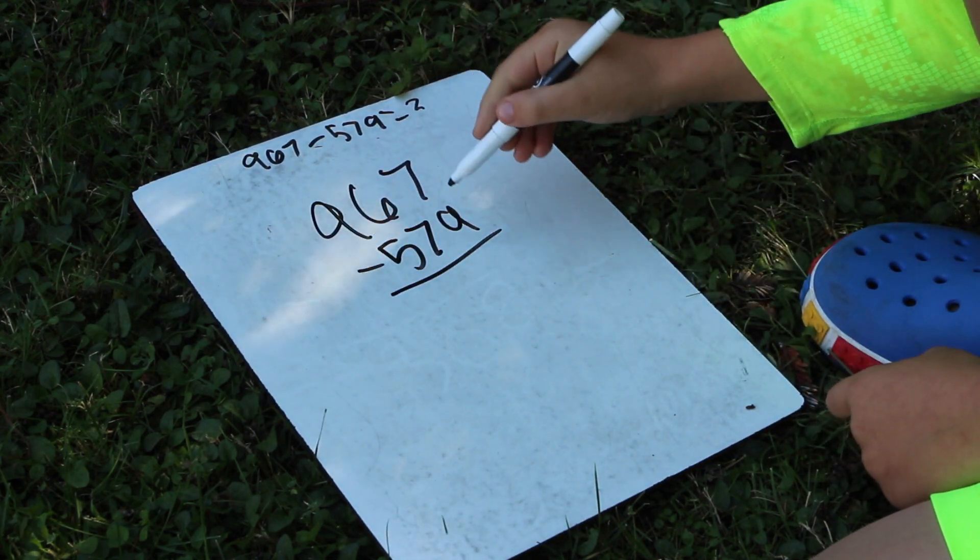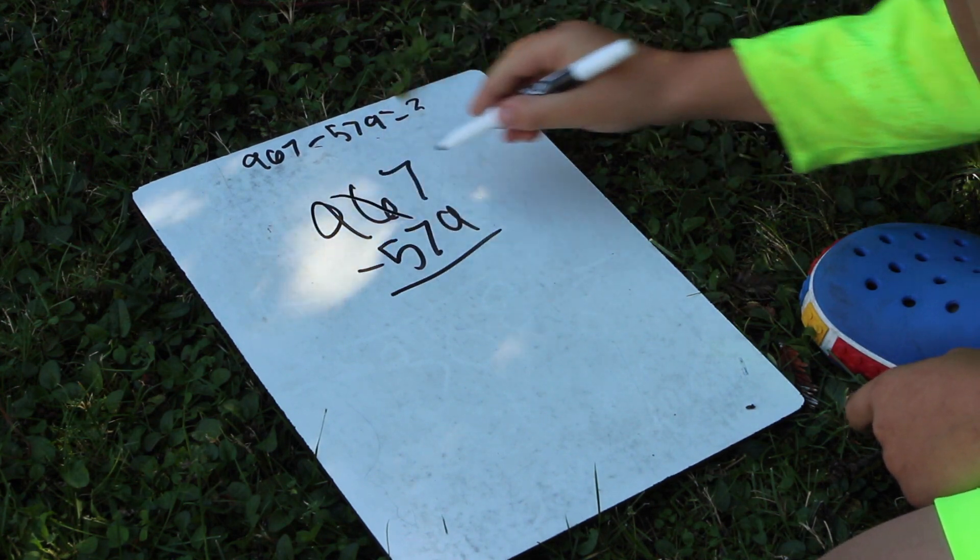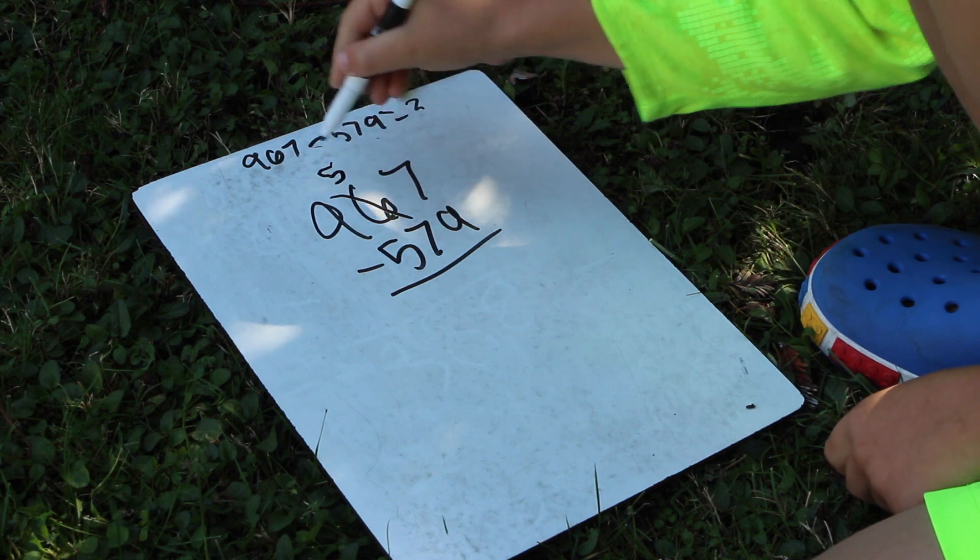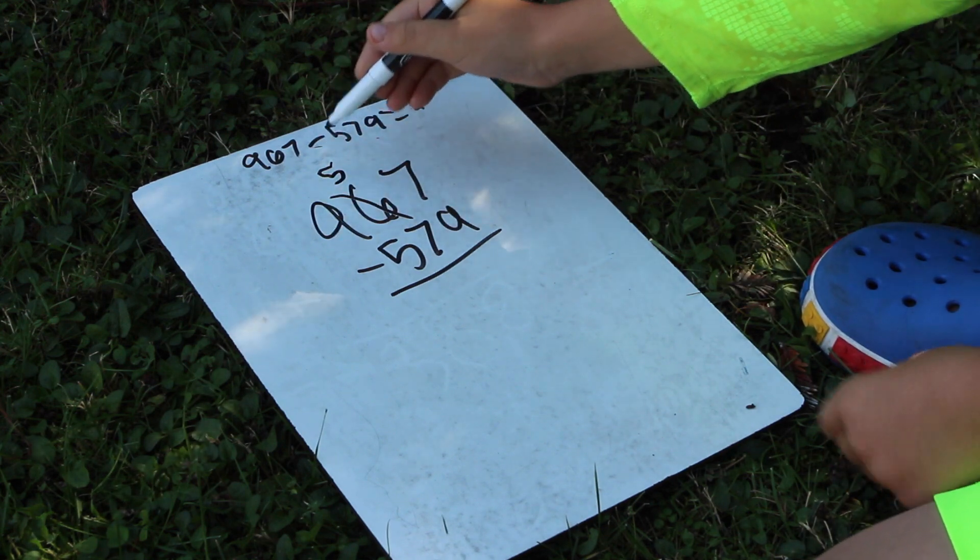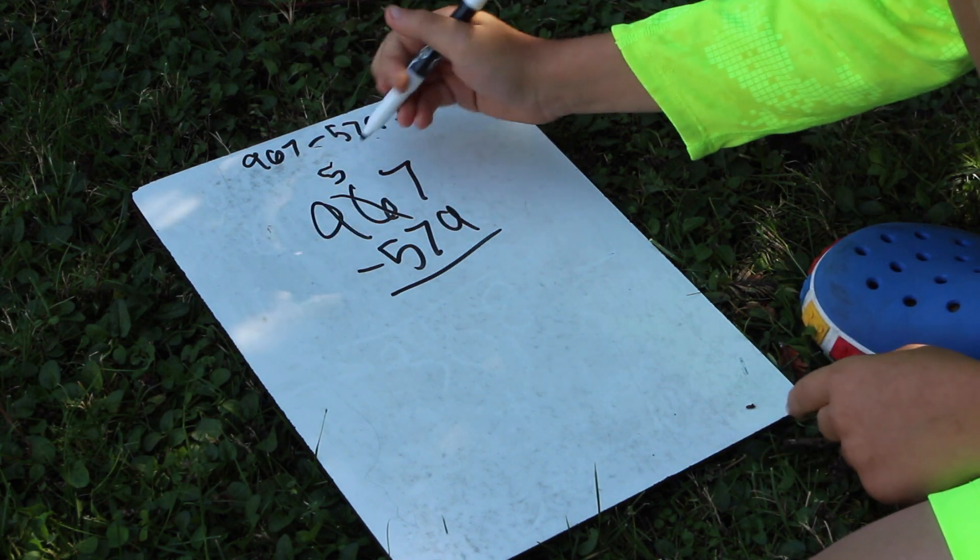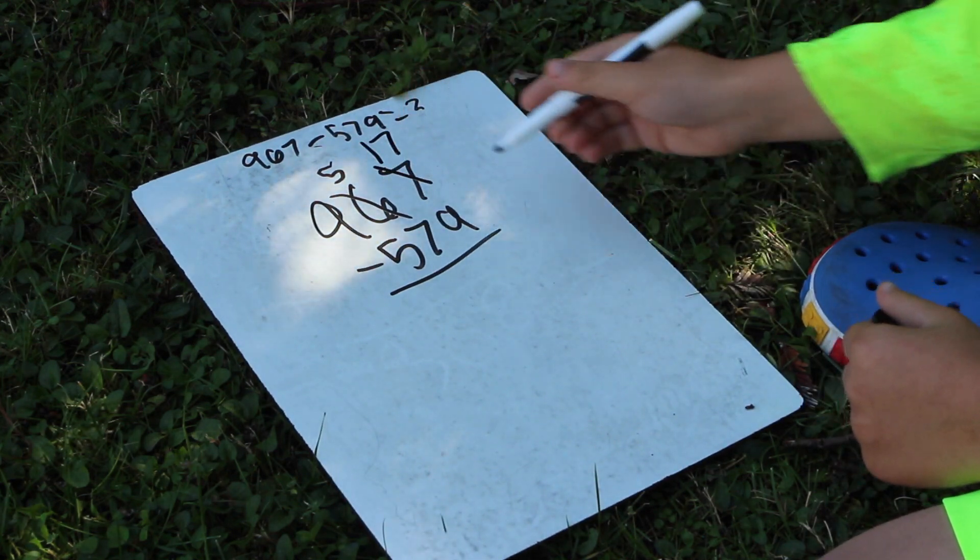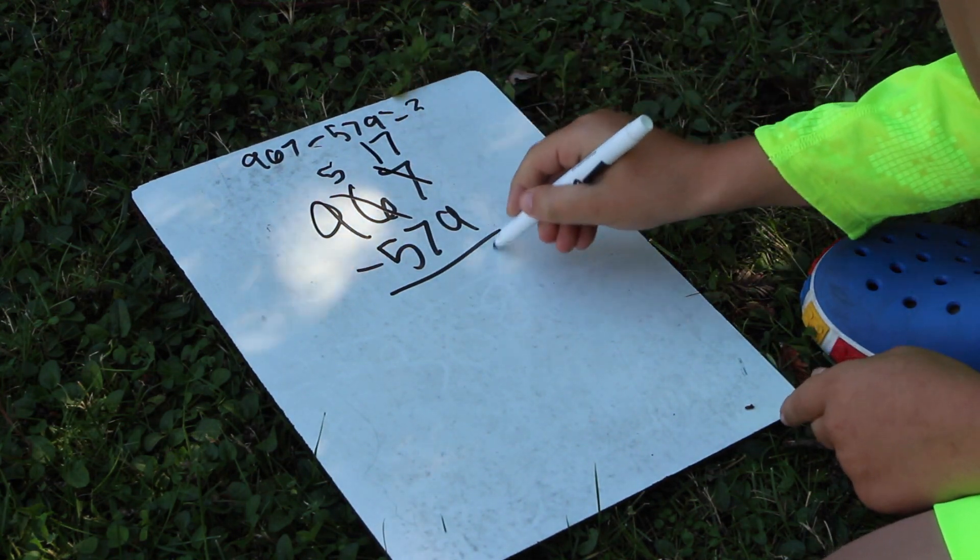7 minus 9 would be negative so we borrow 10 from this 60 which would make this 60 be 50, and then we make this 17 since we just borrowed 10 from this. 17 minus 9 is 8.